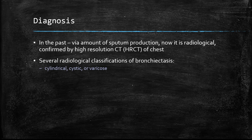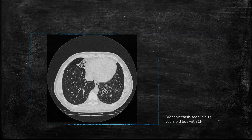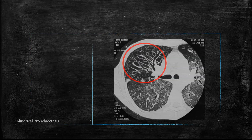There are several classifications of bronchiectasis. Here is the cystic classification — as you can see, the cysts are clearly visible in the left lower lobe on the CT. This next image shows bronchiectasis seen in a 14-year-old boy with cystic fibrosis, again the most common cause of bronchiectasis. And here is cylindrical bronchiectasis, which is quite different in appearance from the cystic type.